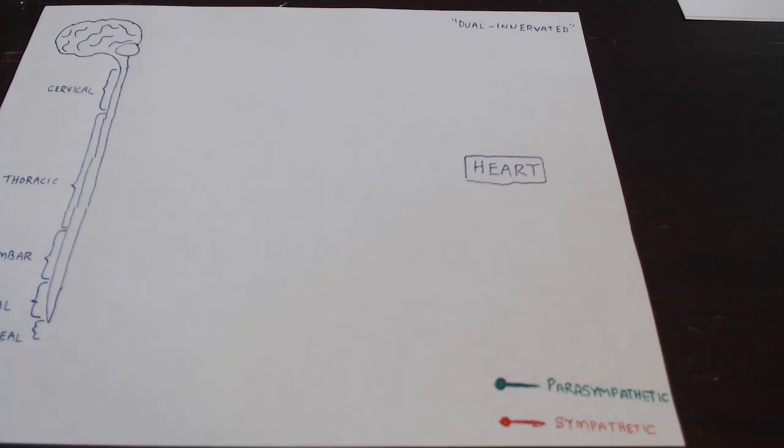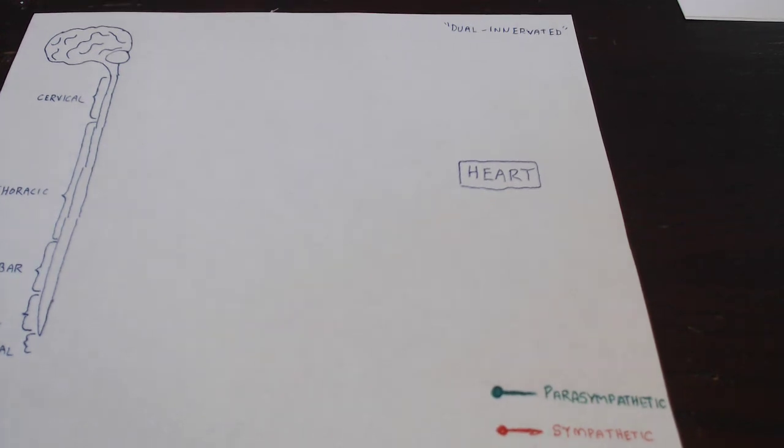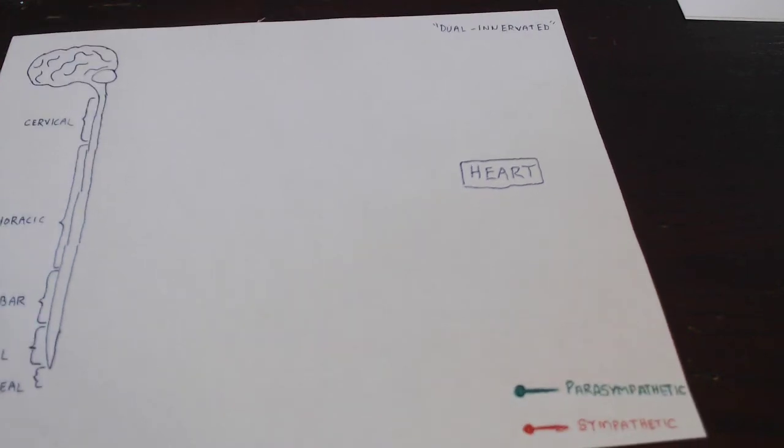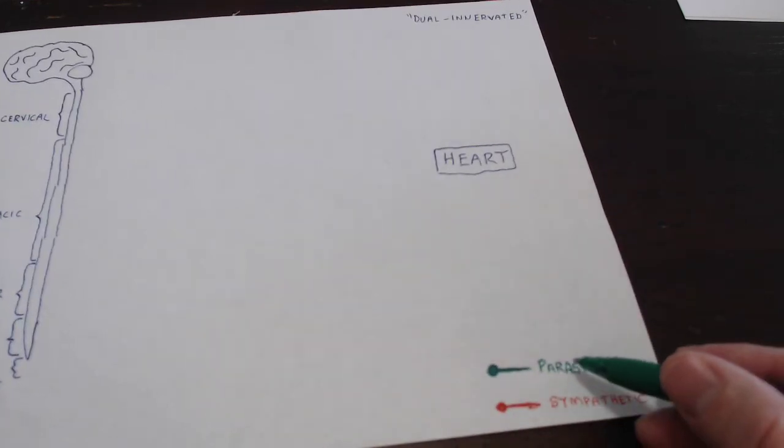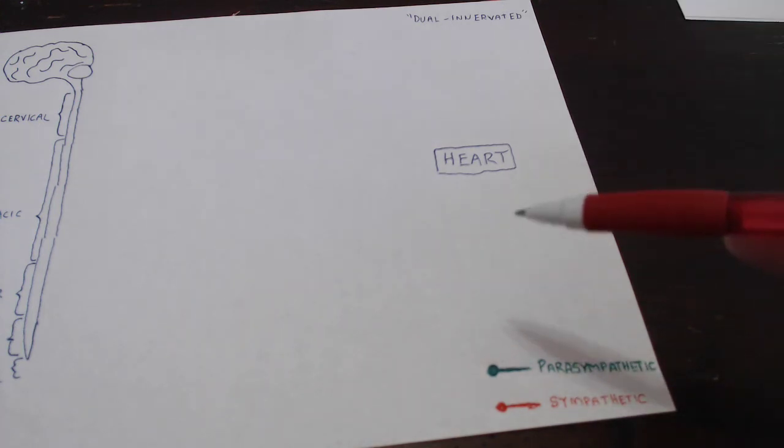The whole purpose of an organ being dual innervated is that we can do either or. We can reduce the activity of something like the heart when necessary, and in other times we can increase its activity. The implication is that parasympathetic pathways and sympathetic pathways are simultaneously going to connect from the central nervous system to the dual innervated organ. The color coding I'm going to use is green pen when indicating a parasympathetic pathway and red pen for a sympathetic pathway.